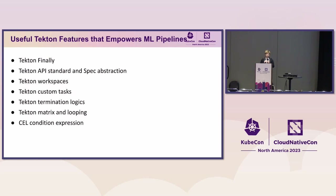We also have Tekton Workspaces, which helps define common volumes across all your pipelines, and you can also define volumes within the same pipeline so all tasks share the same workspace definitions. Of course, we have Tekton custom tasks, which allow any custom logic not provided by Tekton Pipeline out of the box. We also have different termination logics — in machine learning, sometimes you want to free up all resources immediately, but you can also do traditional CI/CD-style cancellation where the current running task completes first before you exit the pipeline. There are multiple ways to terminate Tekton depending on your need.